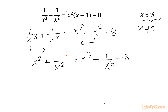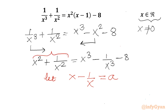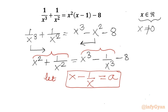Now I will use substitution. Let us consider x minus 1 over x equal to A. From here I need to calculate x squared plus 1 over x squared, and x cubed minus 1 over x cubed in terms of A. I will start by squaring the substitution: x minus 1 over x whole squared equal to A squared.